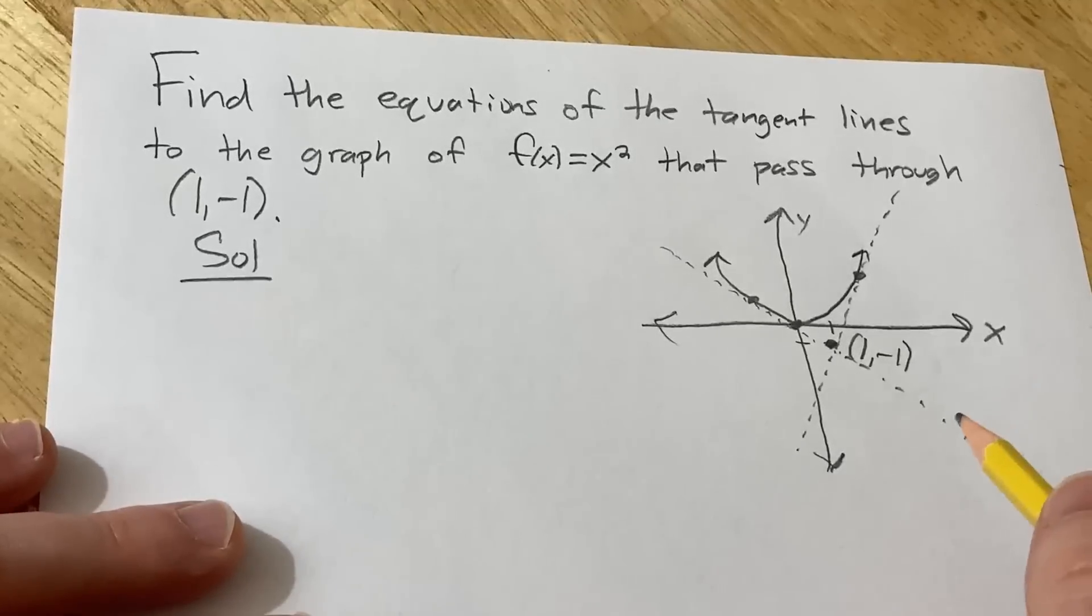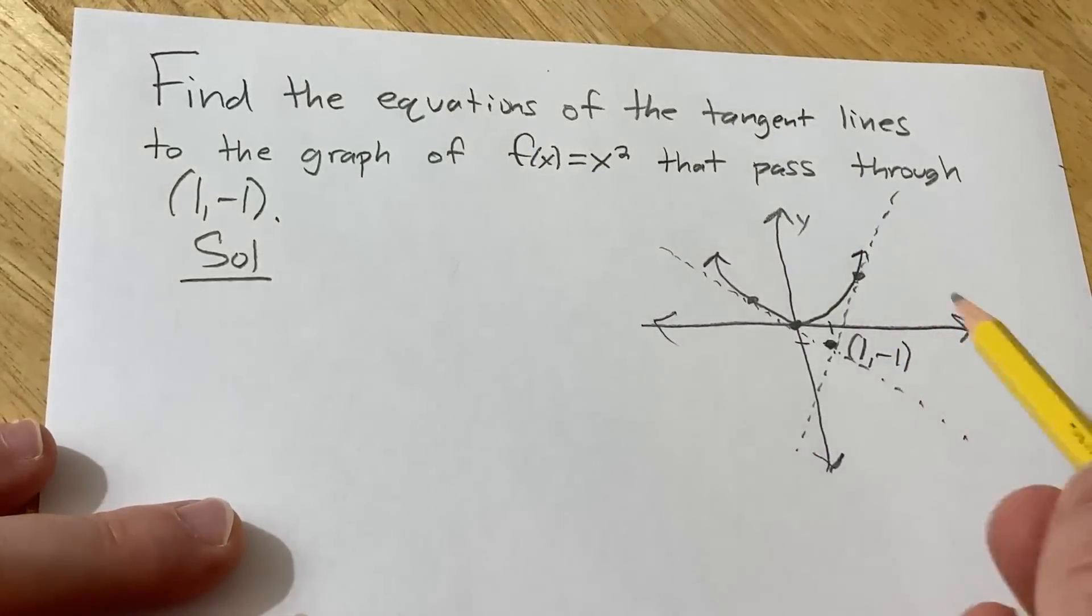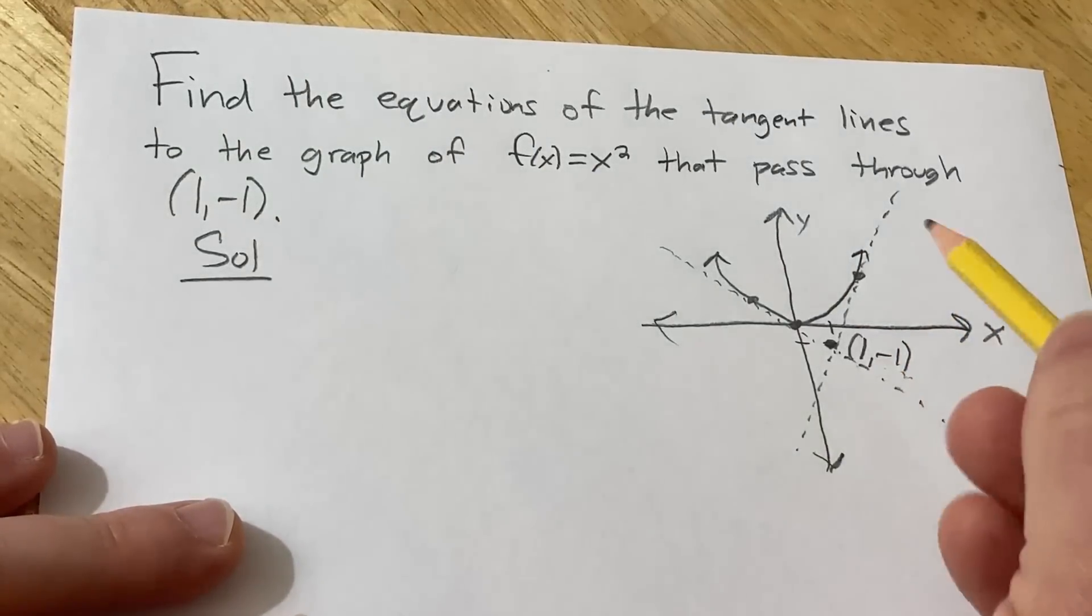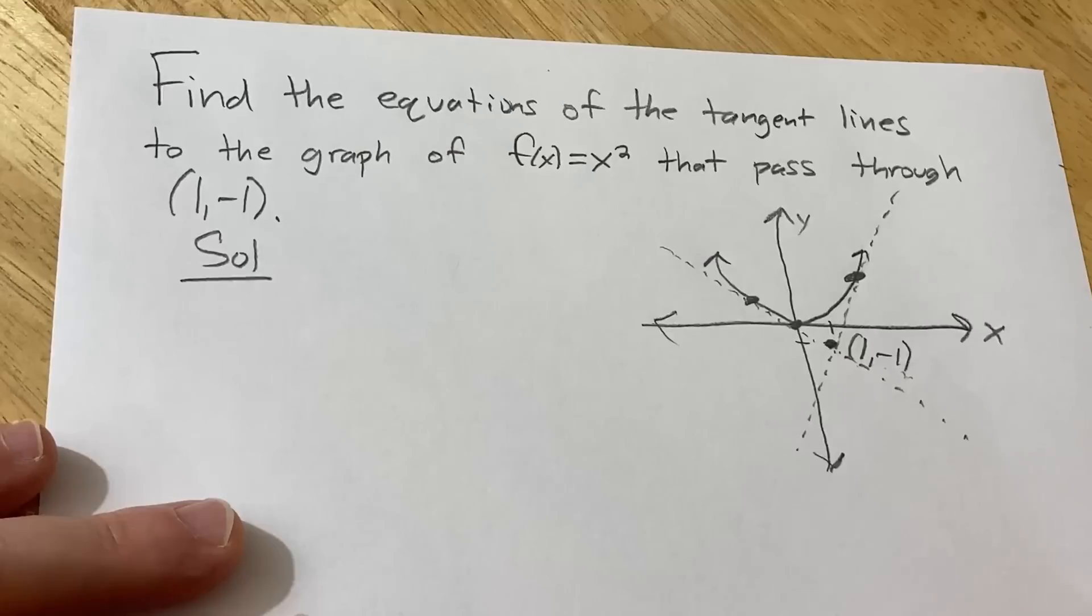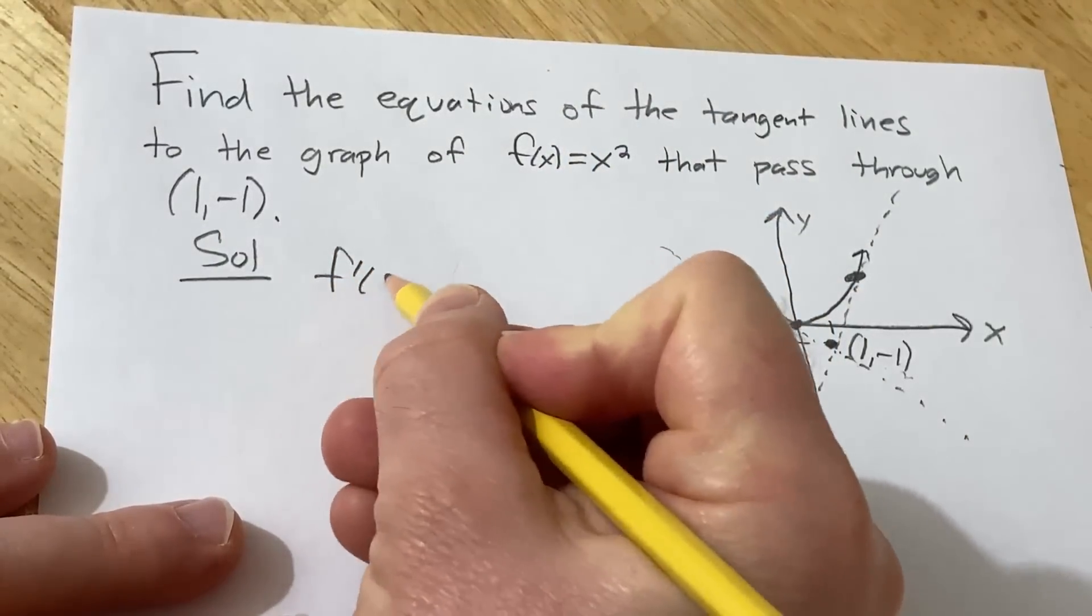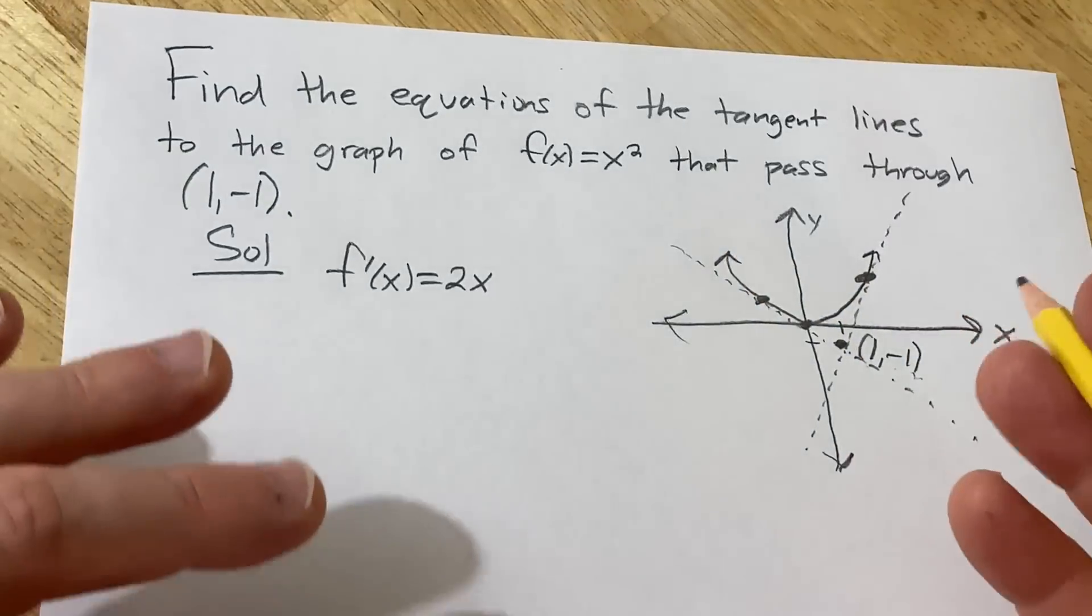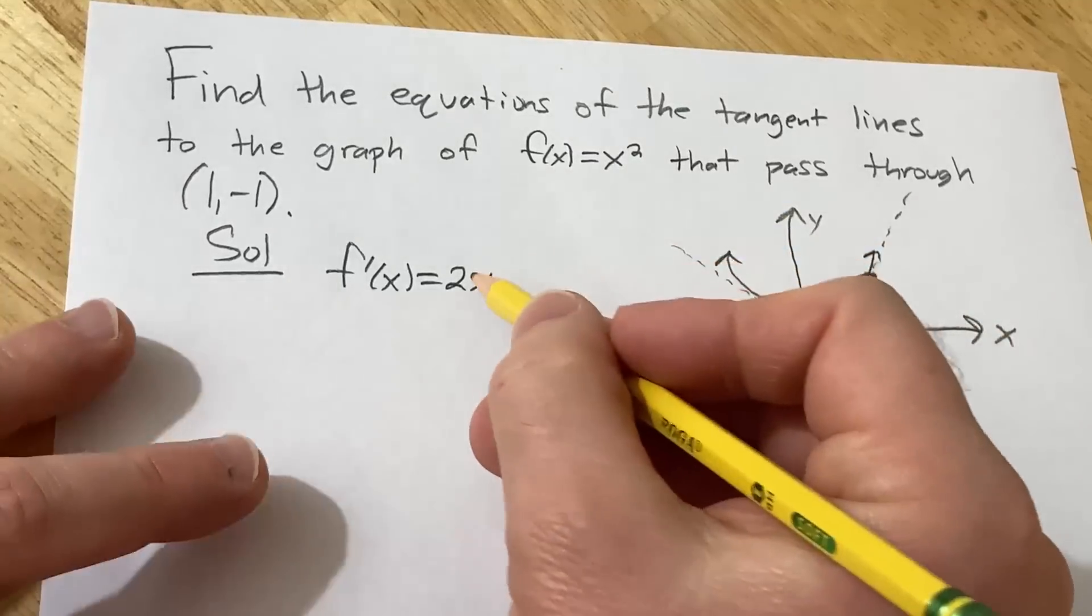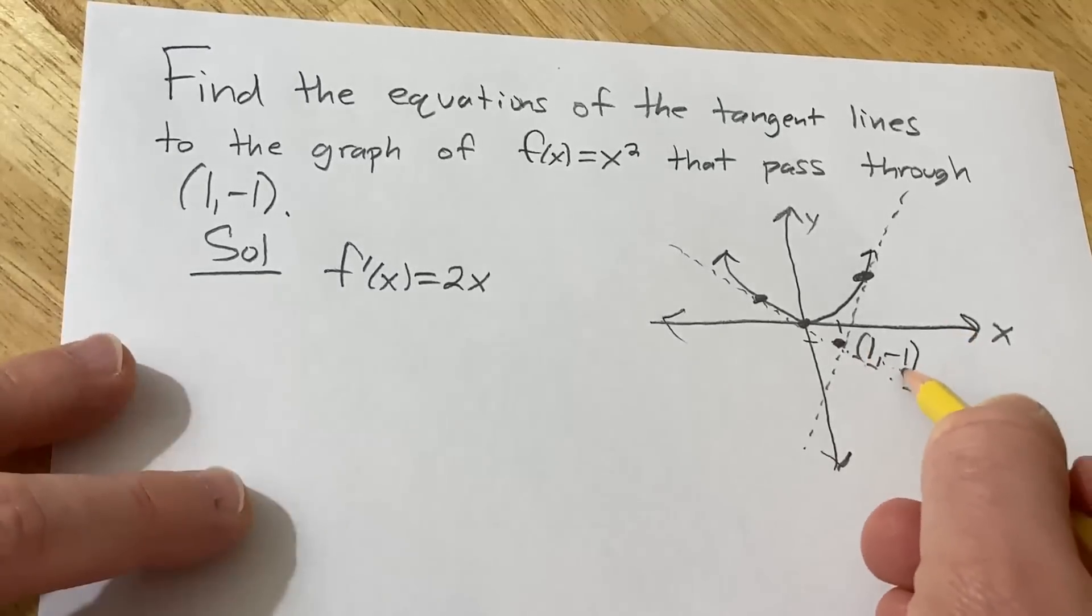All right, so to find the equation of a tangent line, you need two things. You need the point and you need the slope. So we don't even know the point because the tangent lines, they just pass through this point, right? We don't know this point and we also don't know this point. So let's start with what we do know. We do know the slope of the tangent lines. We know the slope is the derivative. So the derivative of this function is just going to be 2x. But then we're kind of stuck. So what else do we do? All we have is this.